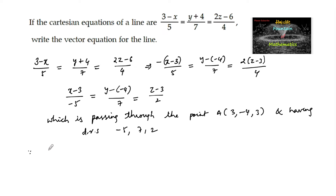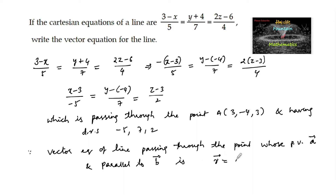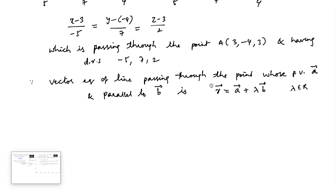Since we know that the vector equation of a line passing through a point whose position vector is vector a and parallel to vector b is given by r equals vector a plus lambda times vector b, where lambda is some scalar.